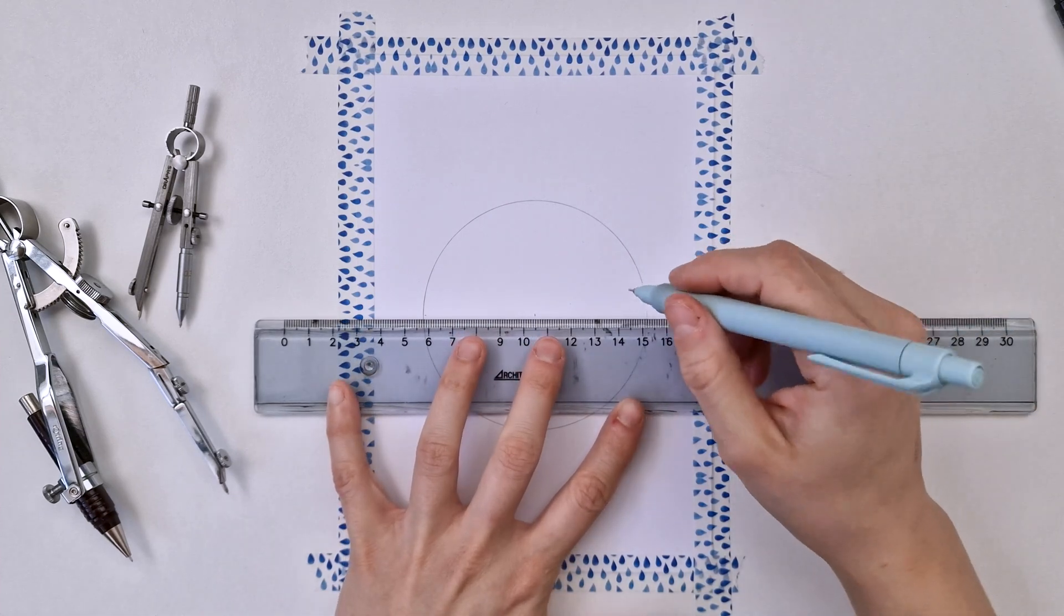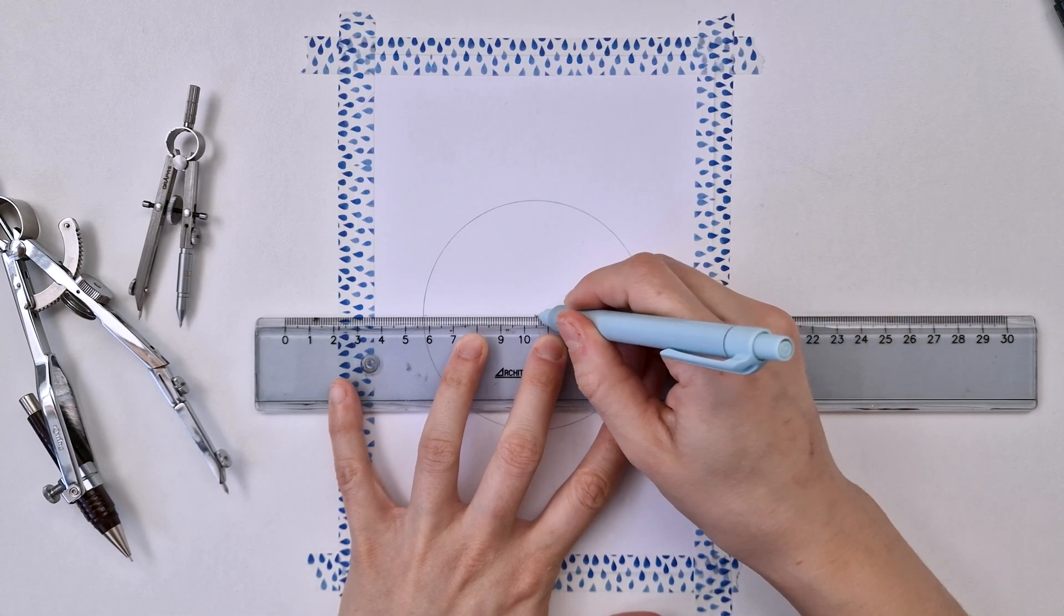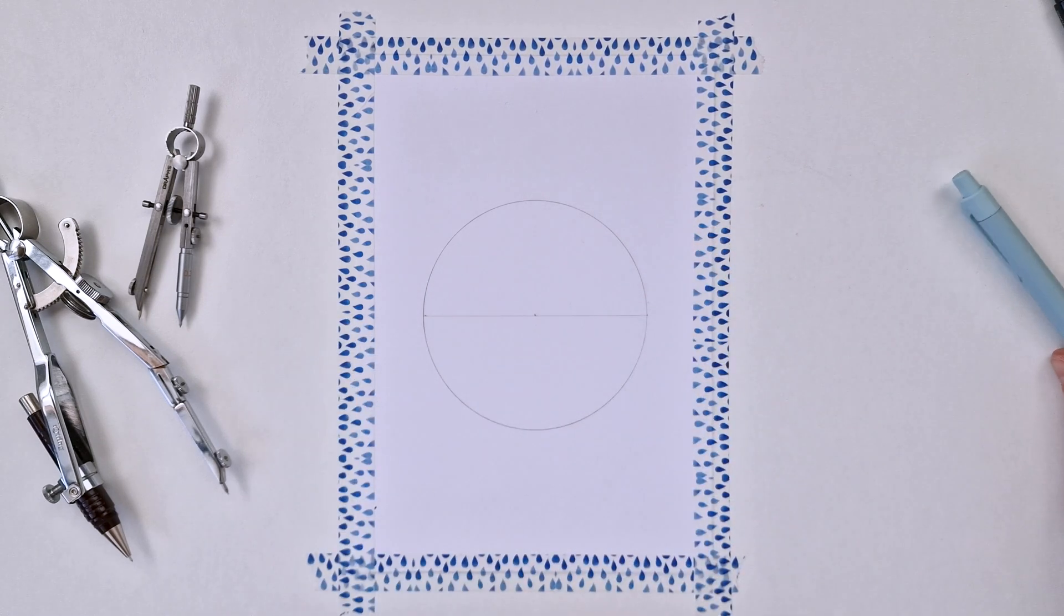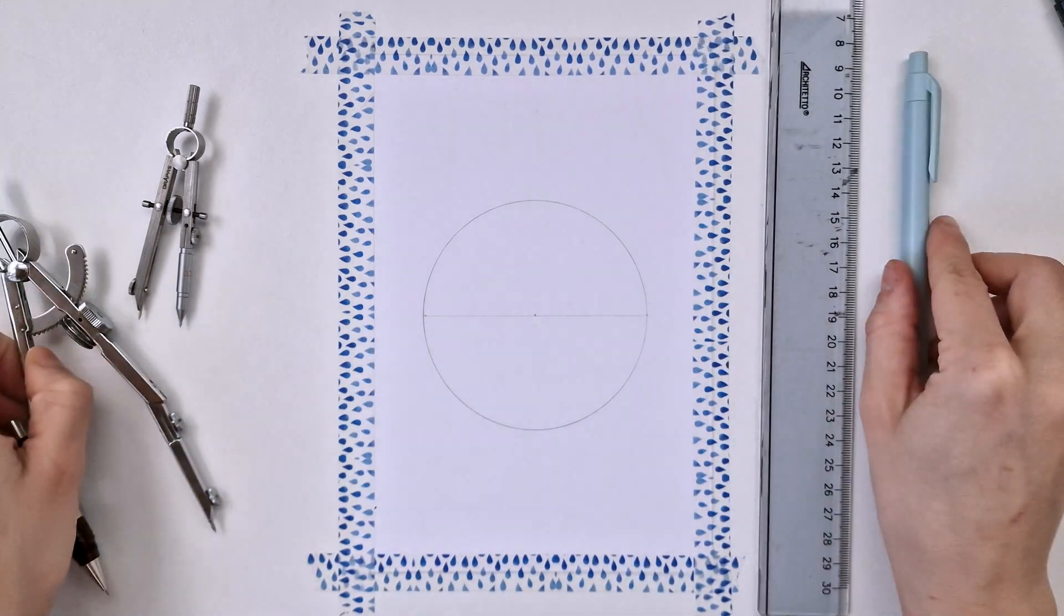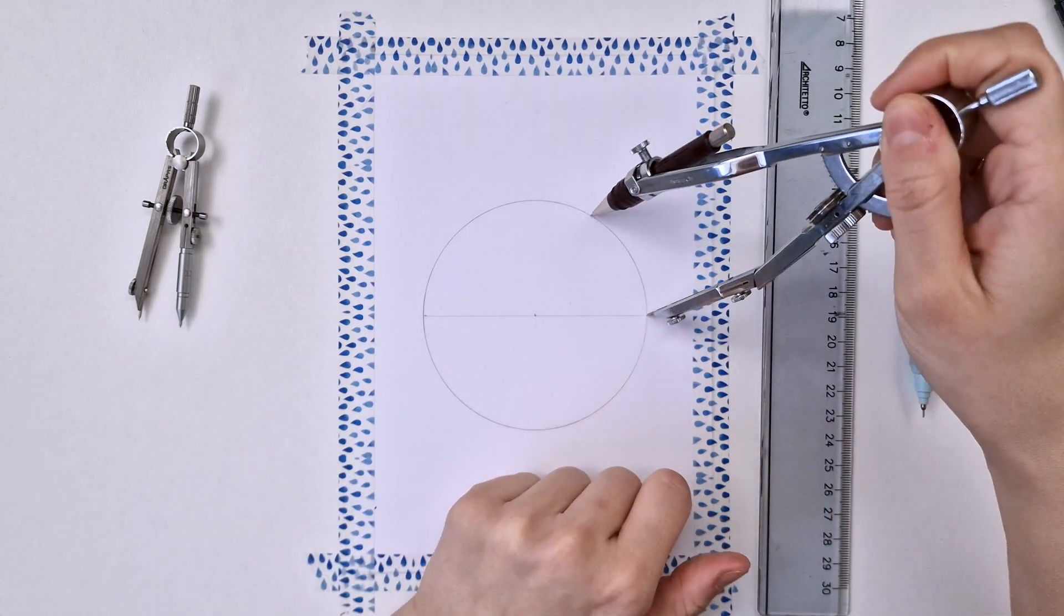You can eyeball it, you can measure it, whatever you prefer. And then I'm doing it very lightly here as I will not need the whole line for my division. Next, using the initial radius, I'm marking two points on the circumference.